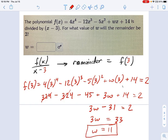So in other words, if we take that 11, plug it all the way back up here into that w, and then evaluate the remainder of f divided by x minus 3, you will get the number 2.